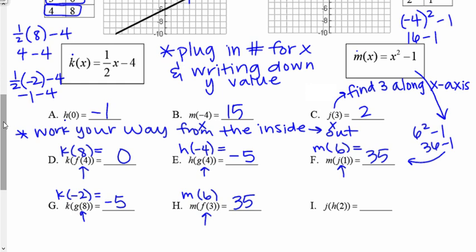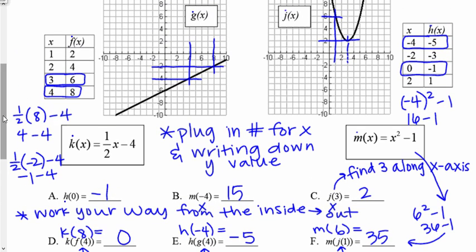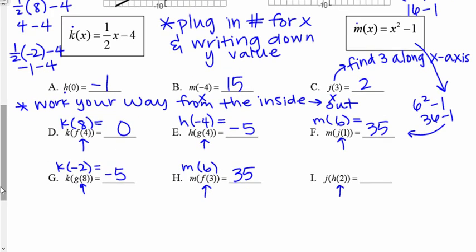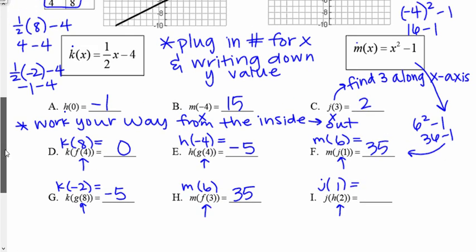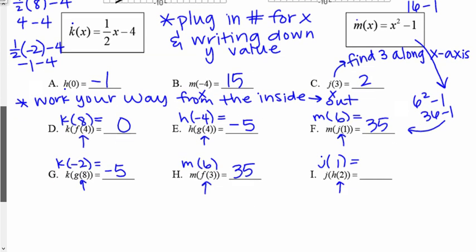i is j of h of two. I'll first do h of two. h is that table over there — h of two is one. Then I'm doing j of one. j is that graph — j of one is six. I already did that one. Six is my final answer.